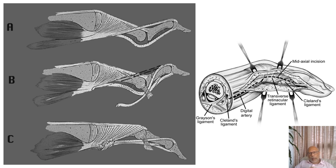Here is the mechanism of how we do a SORL procedure. We take the lateral band of the extensors, detach them, and reroute them volar to Grayson's and Cleland's ligament so that instead of extending the PIPJ, they become a flexor of the PIPJ. As you can see in diagram C, this now goes beneath the axis of the joint volarly, and is sutured back as a check-rein mechanism. This is a very elegant and reliable procedure for curing swan necks that produce locking as the primary symptom.